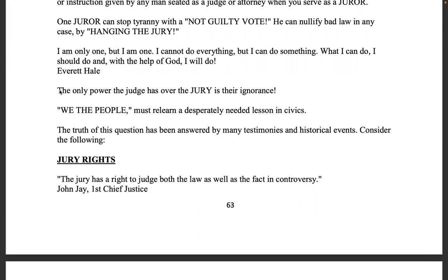The issue now is you can't even be on a jury without being registered to vote, and voting is for a system that is usurping the constitutional republic. But within that corrupt system, people can still vote not guilty — we can start fixing things if people just learned their rights. Outside of that system, we as the people can and should form grand juries and start investigating and indicting these criminals for violating the constitution — it is punishable by death.